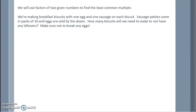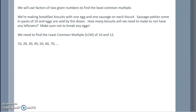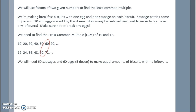We will use factors of two given numbers to find the least common multiple. We're making breakfast biscuits with one egg and one sausage each. Sausage patties come in packs of ten and eggs by the dozen. How many biscuits do we need to make with no leftovers? We find the least common multiple of ten and twelve by listing multiples: ten, twenty, thirty, forty, fifty, sixty; twelve, twenty-four, thirty-six, forty-eight, sixty. The LCM is sixty, so we need sixty sausages and sixty eggs — five dozen — to make equal amounts with no leftovers.